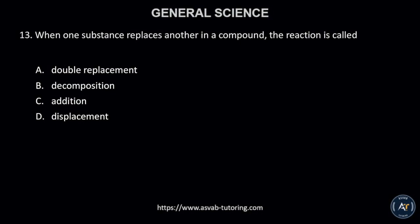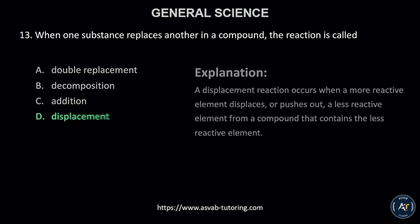Number 13. When one substance replaces another in a compound, the reaction is called? A. double replacement, B. decomposition, C. addition, or D. displacement? The correct answer is letter D, displacement. A displacement reaction occurs when a more reactive element displaces, or pushes out, a less reactive element from a compound that contains the less reactive element.